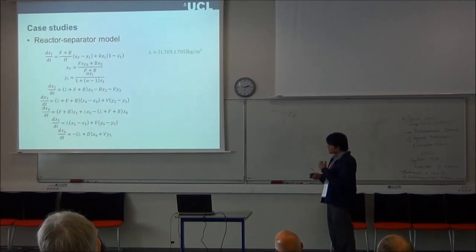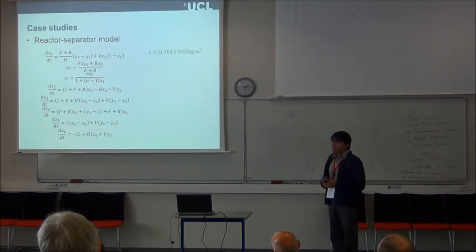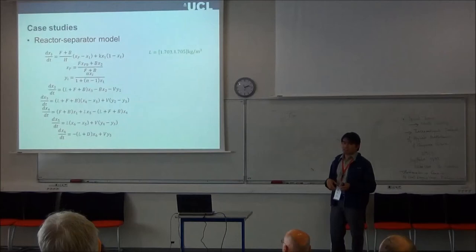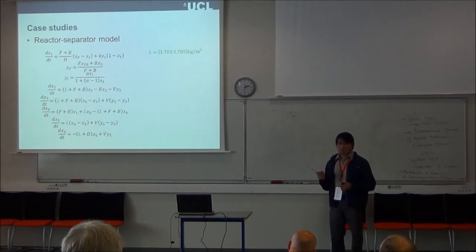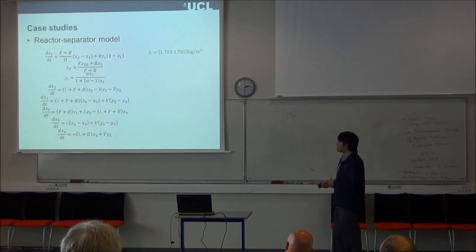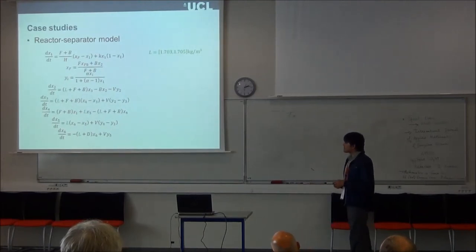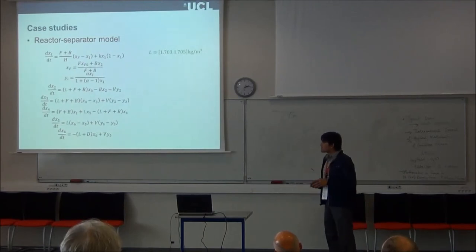And the next example is the reactor separator model. This only describes again a reaction in a batch reactor, and then the products are passed into a distillation column in order to improve the purity of the product. So we have set again a one interval parameter, and some others were tested but we have obtained similar results. Now we have six states.